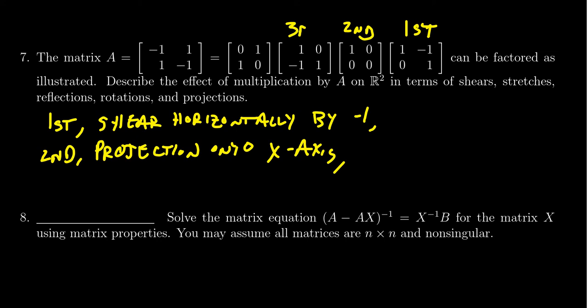For our third matrix, this is a lower triangular matrix with a negative 1 below. This is similar to step number 1—it's going to be a shear. But this is going to be vertically. When you talk about shears, you do need to emphasize whether it's horizontal or vertical. So we're shearing vertically by a factor of negative 1.